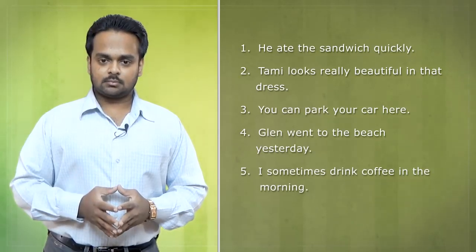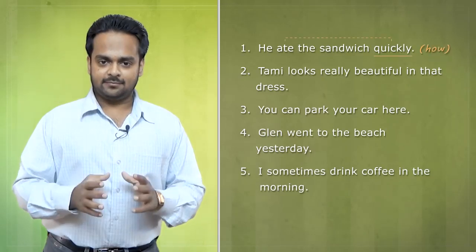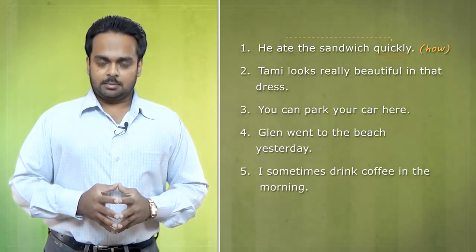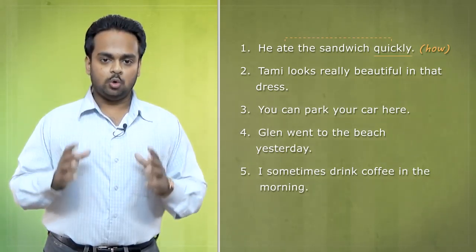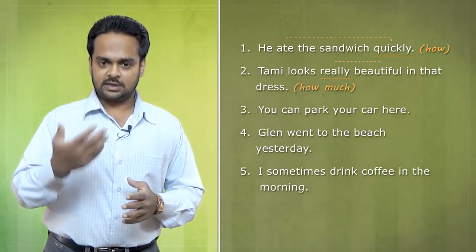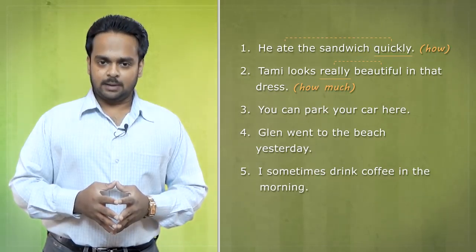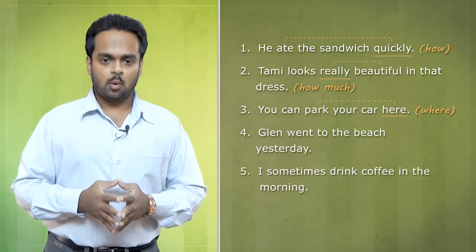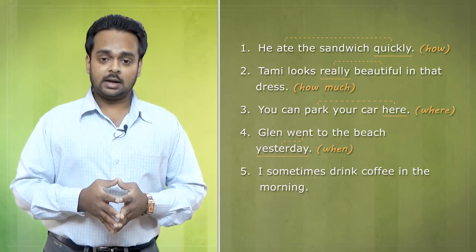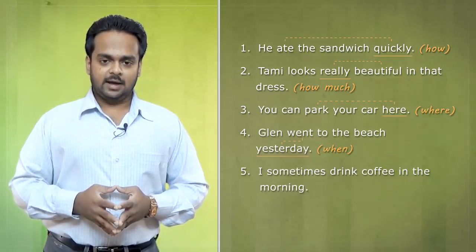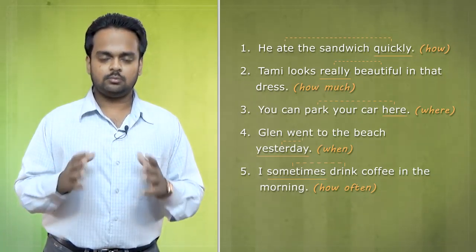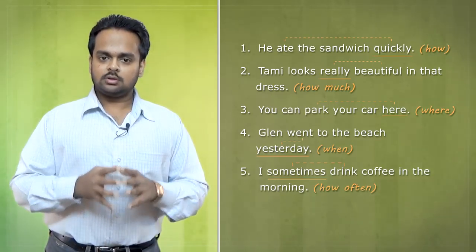Take a look at these examples. In number one, he ate the sandwich quickly. Quickly is the adverb – it gives information about the verb ate. How did he eat the sandwich? He ate it quickly. In number two, she is really beautiful – the adverb really modifies the adjective beautiful. In number three, we have an adverb of place – the word here, which answers where. In number four, we have an adverb of time – yesterday, which tells us when. And in number five, the adverb is sometimes, which answers how often. How often do I drink coffee? Only sometimes.